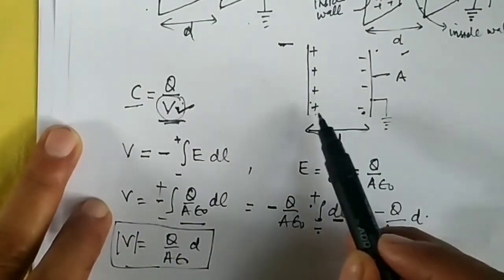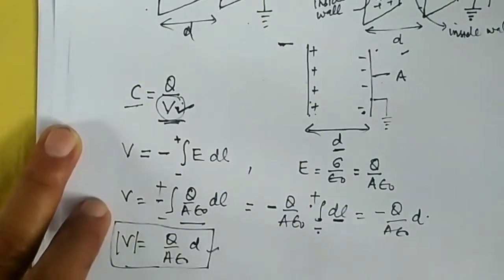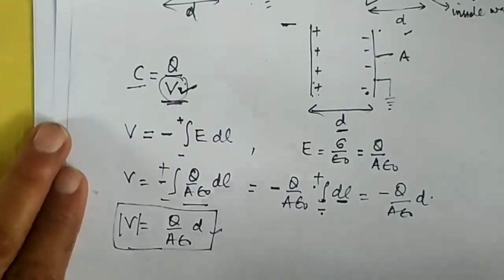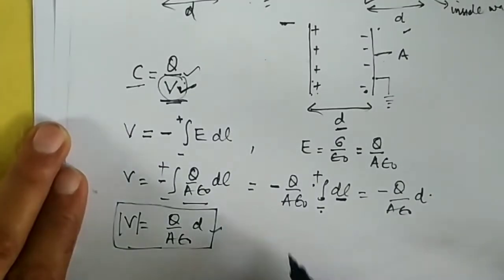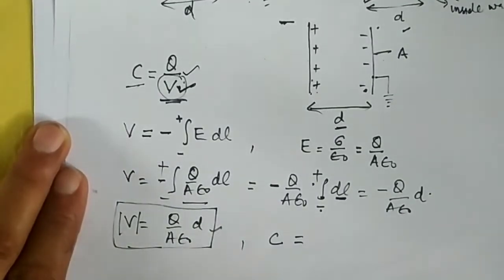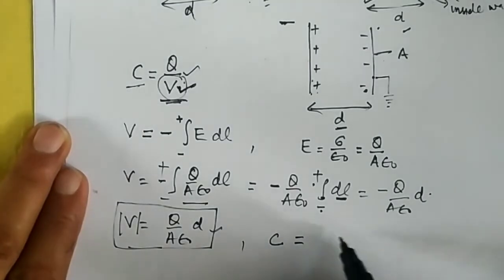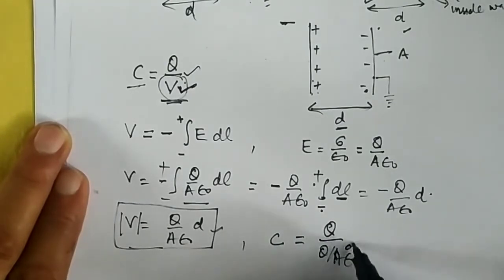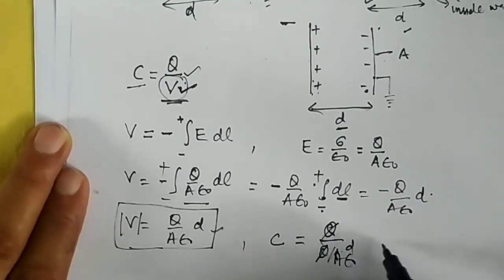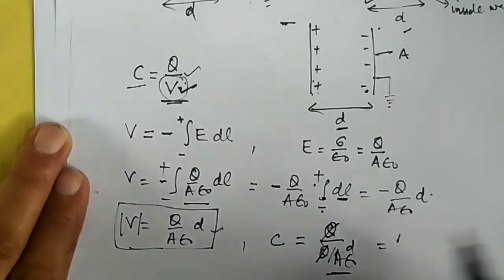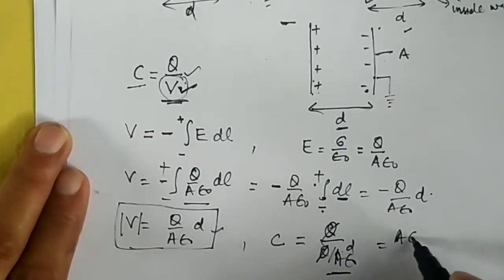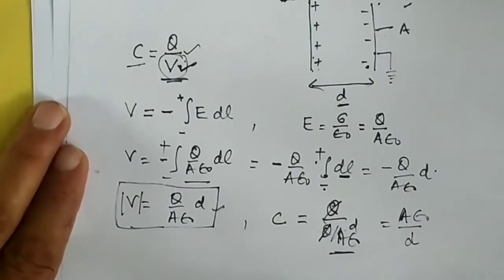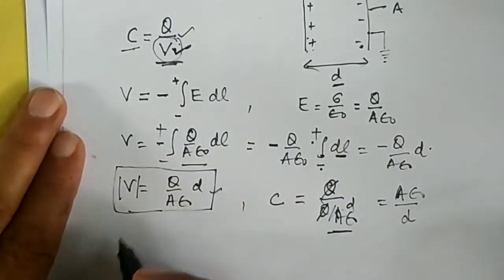This electric potential is the work done to bring a unit positive charge from the negative plate to the positive plate. Now using the definition of capacitance, C equals Q divided by V, we substitute V equals Q times D divided by A times epsilon naught. The Q terms cancel out, and we get the capacitance C equals epsilon naught times A divided by D.